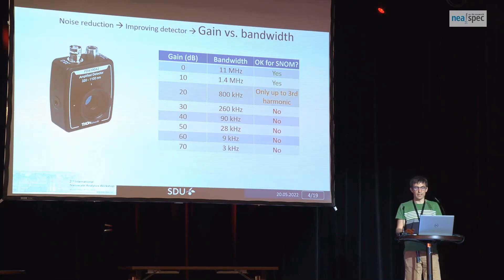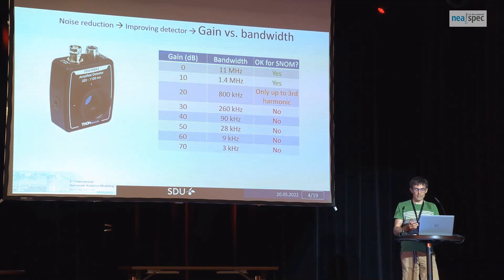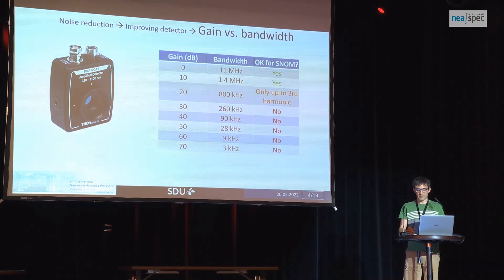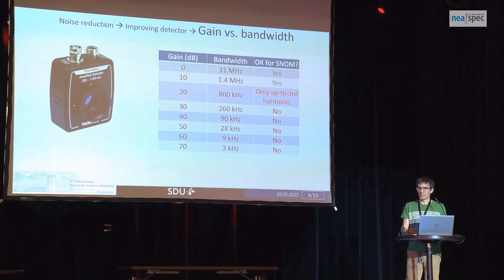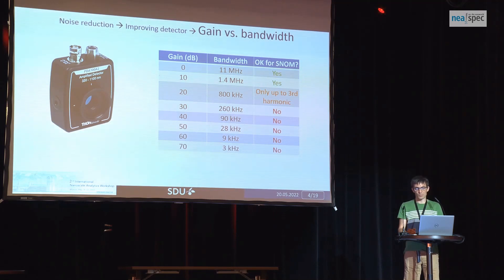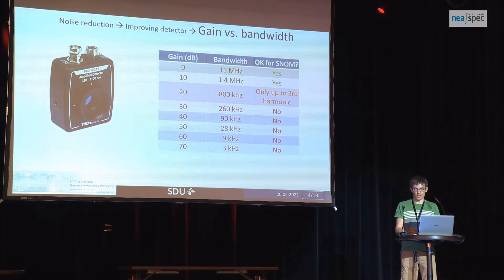Another important parameter of the detector is bandwidth. Sometimes the source is very weak and you need to amplify the signal, but for the price of amplification you pay with bandwidth. Remember that in the Neospec system you demodulate at high harmonics — preferably at the third and fourth harmonic — and therefore you should pay attention to the detector bandwidth. For fourth harmonic detection it should be above 1 MHz. Therefore, you cannot use just any amplification; only a small range of amplification is usable.